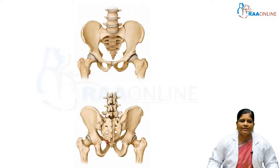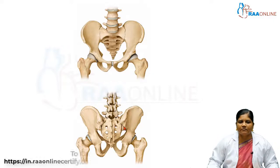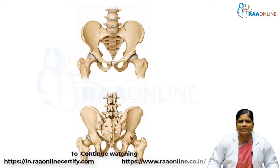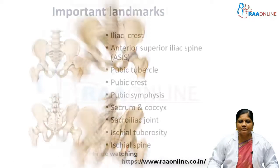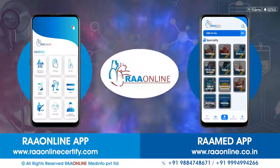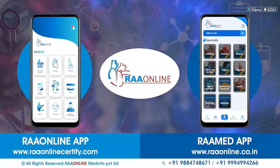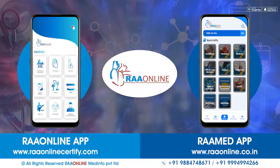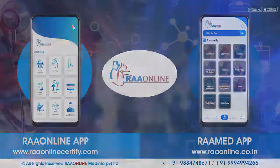In the posterior view of the pelvic girdle, the ilium articulates with the sacrum forming the sacroiliac joint. There is the posterior superior iliac spine and the posterior inferior iliac spine. Beneath that is the greater sciatic notch, followed by a pointed tip-like structure known as the ischial spine, and then the ischial region.